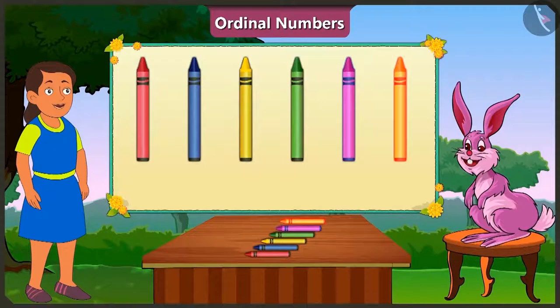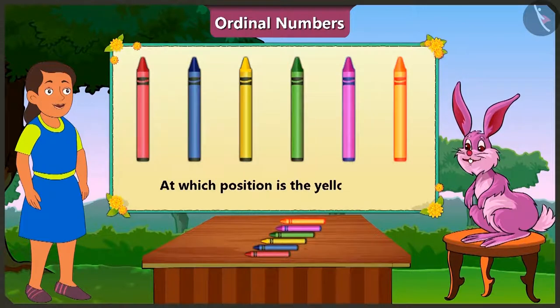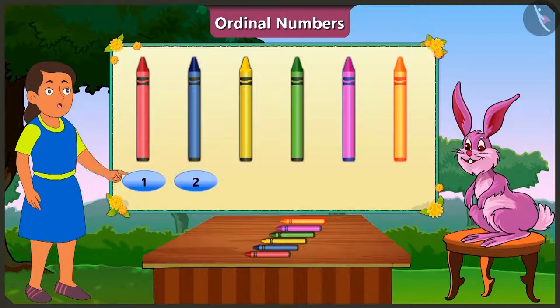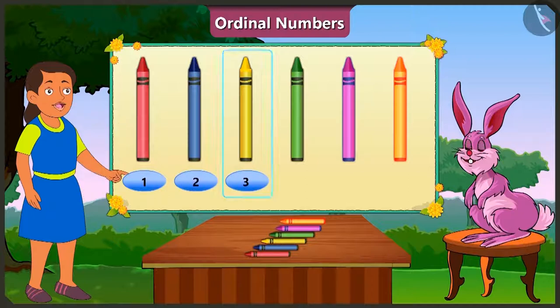Bubbly, can you tell me the position of the yellow crayon? Look, Bunny — one, two, three. The yellow crayon is at the third place.